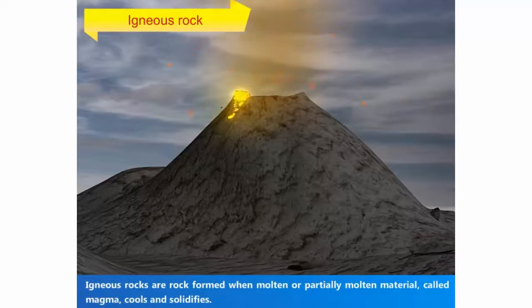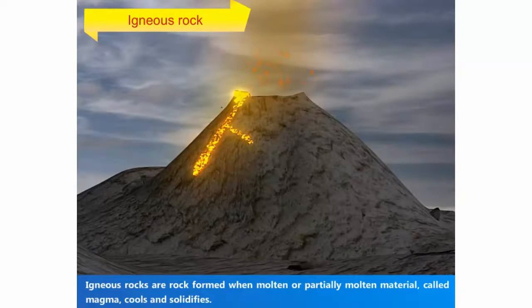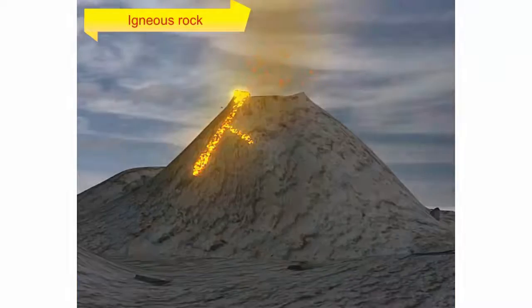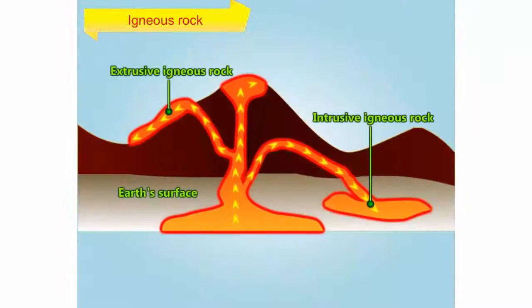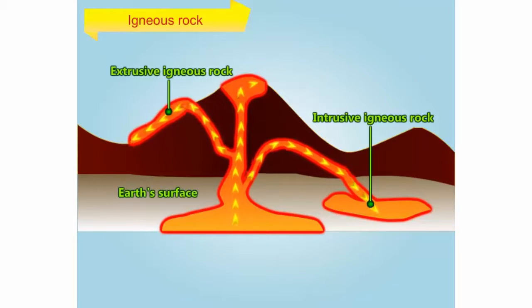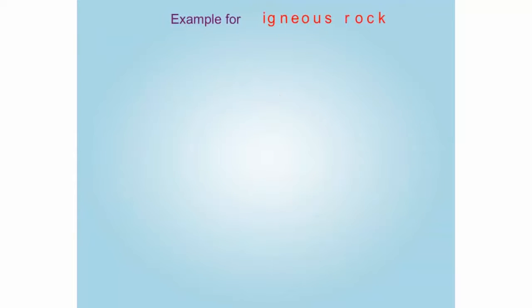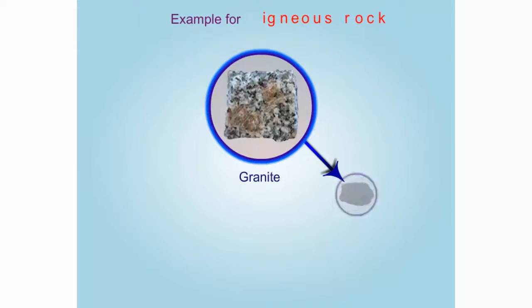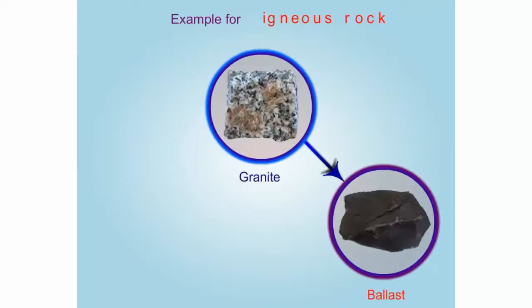Igneous rocks are formed when molten or partially molten material called magma pools and solidifies. Igneous rocks are classified according to the depth at which they are formed in the earth's crust. Let us see the example for igneous rocks.